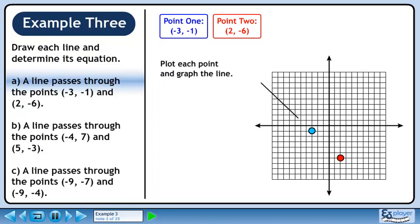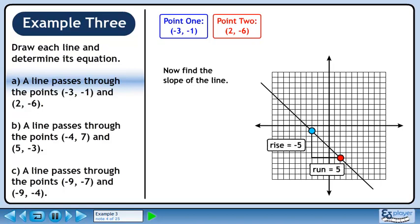Plot each point and graph the line. Now find the slope of the line. The rise is minus 5 and the run is 5. The slope is minus 5 over 5. Minus 5 over 5 divides to minus 1.